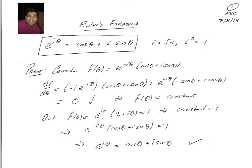Suppose we consider a function of theta, which is e to the minus i theta times cosine theta plus i sine theta. We can use the product rule to differentiate that with respect to theta. If we differentiate the first term, e to the minus i theta, treating i as a constant, we get minus i e to the minus i theta times cosine theta plus i sine theta. In the second term, we just take the derivatives of the trigonometric functions. We get minus sine theta plus i cosine theta.